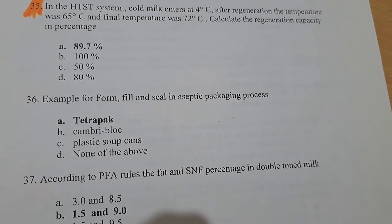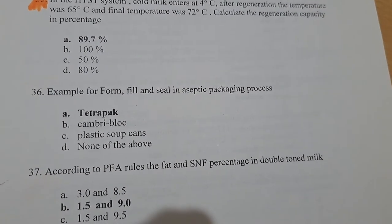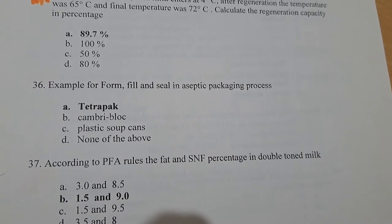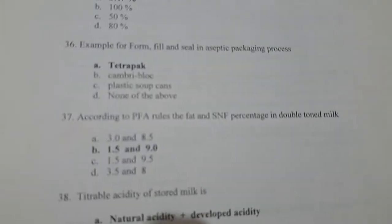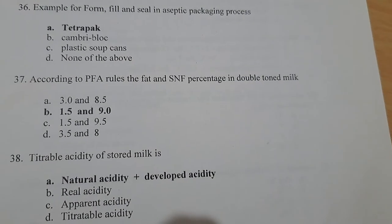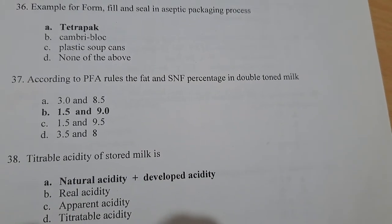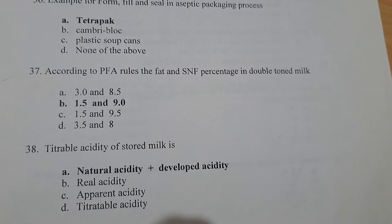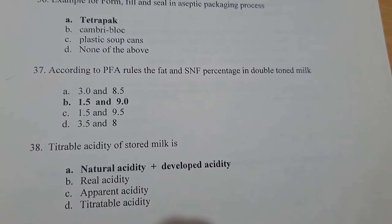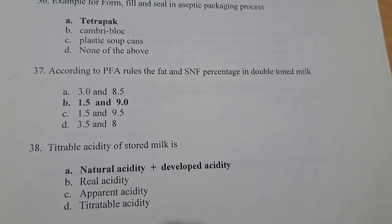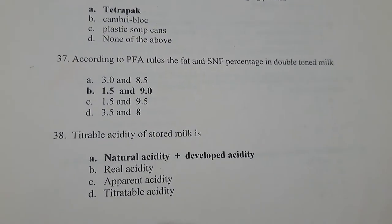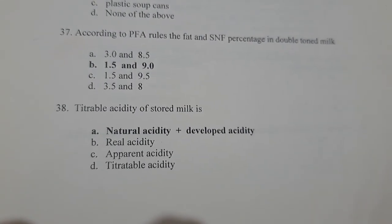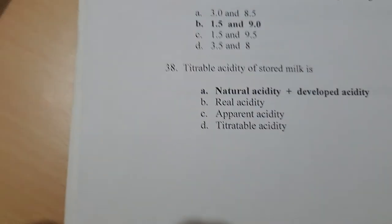An example of a form-fill-seal aseptic packaging process is Tetra Pak. According to PFA rules, the fat and SNF percentage in double-toned milk is 1.5% fat and 9% SNF. Titratable acidity of stored milk equals natural acidity plus developed acidity.